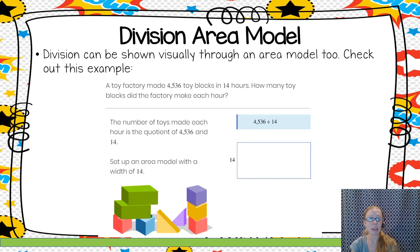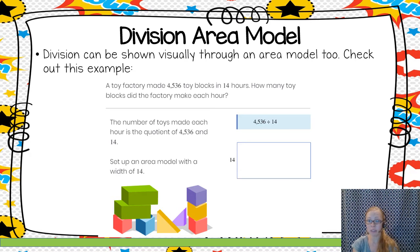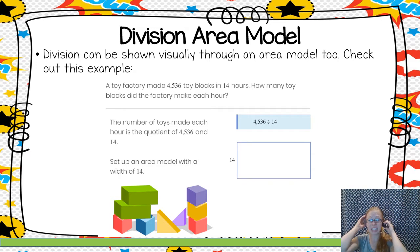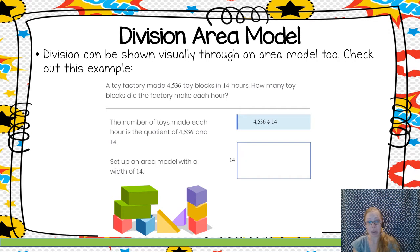A toy factory made 4,536 toy blocks in 14 hours. How many toy blocks did the factory make each hour? So we're doing the division problem 4,536 divided by 14. It's a big division problem, and the steps of creating an area model are very much the same as the steps for the algorithm — just instead of writing them underneath the house, you write them in a box.